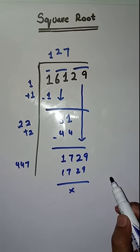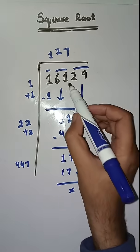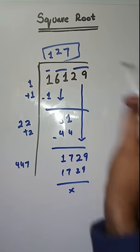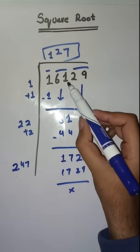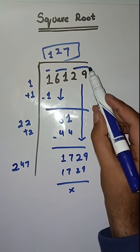So we completely solved it. So square root of 16129 is 127. The calculation is complete. Square root of 16129 is 127.